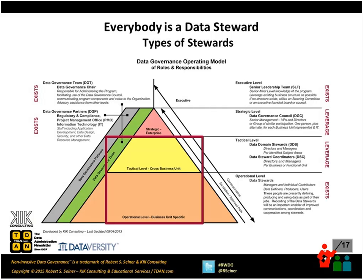Within the red block on the screen is the area we're typically talking about. At the operational level, pretty much everybody is a data steward. At the tactical level, we need to identify the subject matter experts that are going to assist us in resolving issues that cross different parts of the organization. This operating model becomes a very important item when we're building our governance program. My suggestion about this model is that rather than trying to plug your organization into the model, take it and overlay it over what already exists in your organization — that's a lot less invasive.